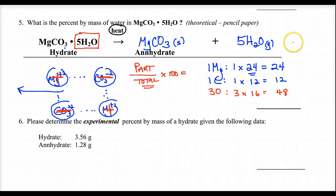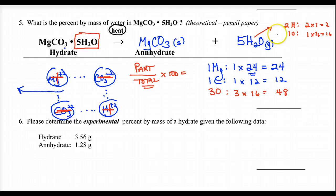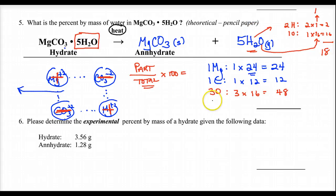One water molecule has two H's and one oxygen. Two times 1 is 2, and one times 16 is 16, so one water has a mass of 18. We have five waters, so five times 18 is 90. It's very helpful to keep your water together when doing these problems.